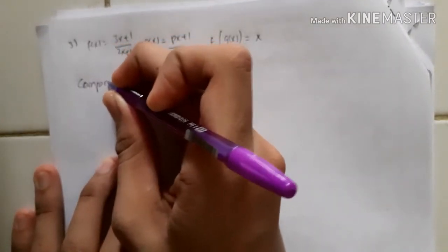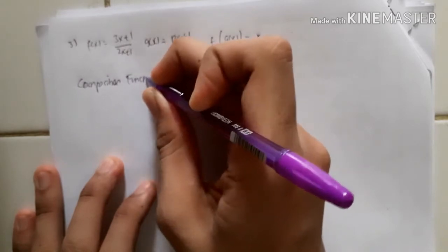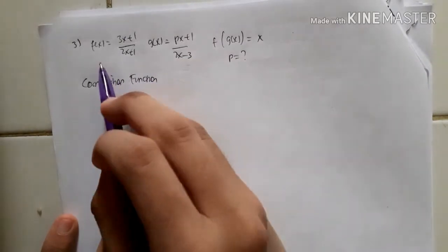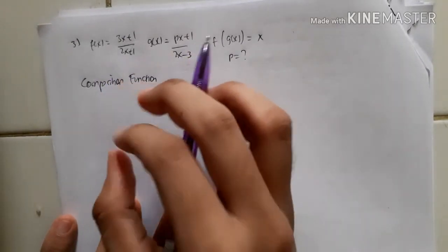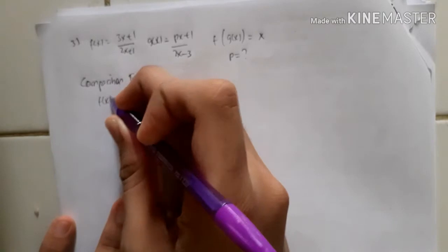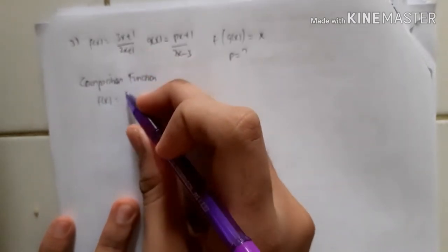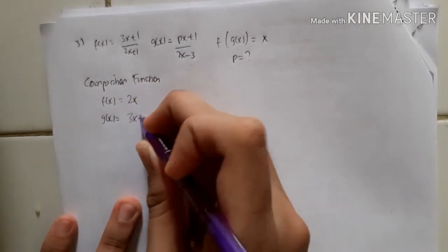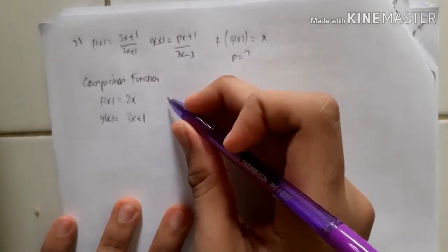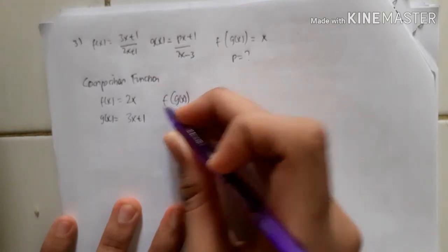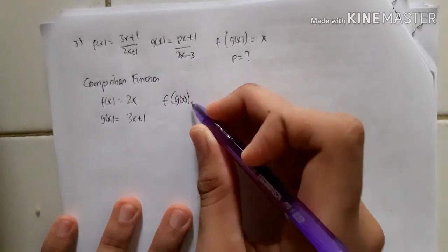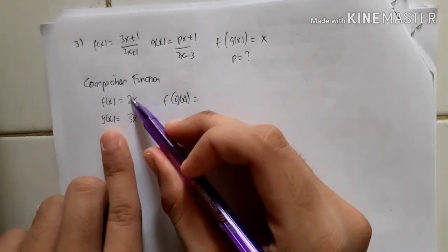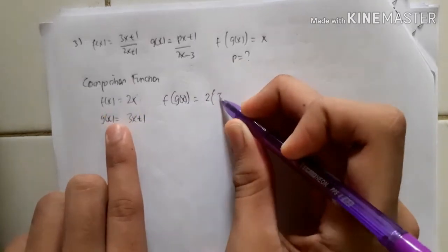As I mentioned, this involves a composition function. A composition function is where you take two functions and compose them into one. For example, if f(x) = 2x and g(x) = 3x + 1, then f(g(x)) means you substitute g(x) into f(x), giving you 2(3x + 1).